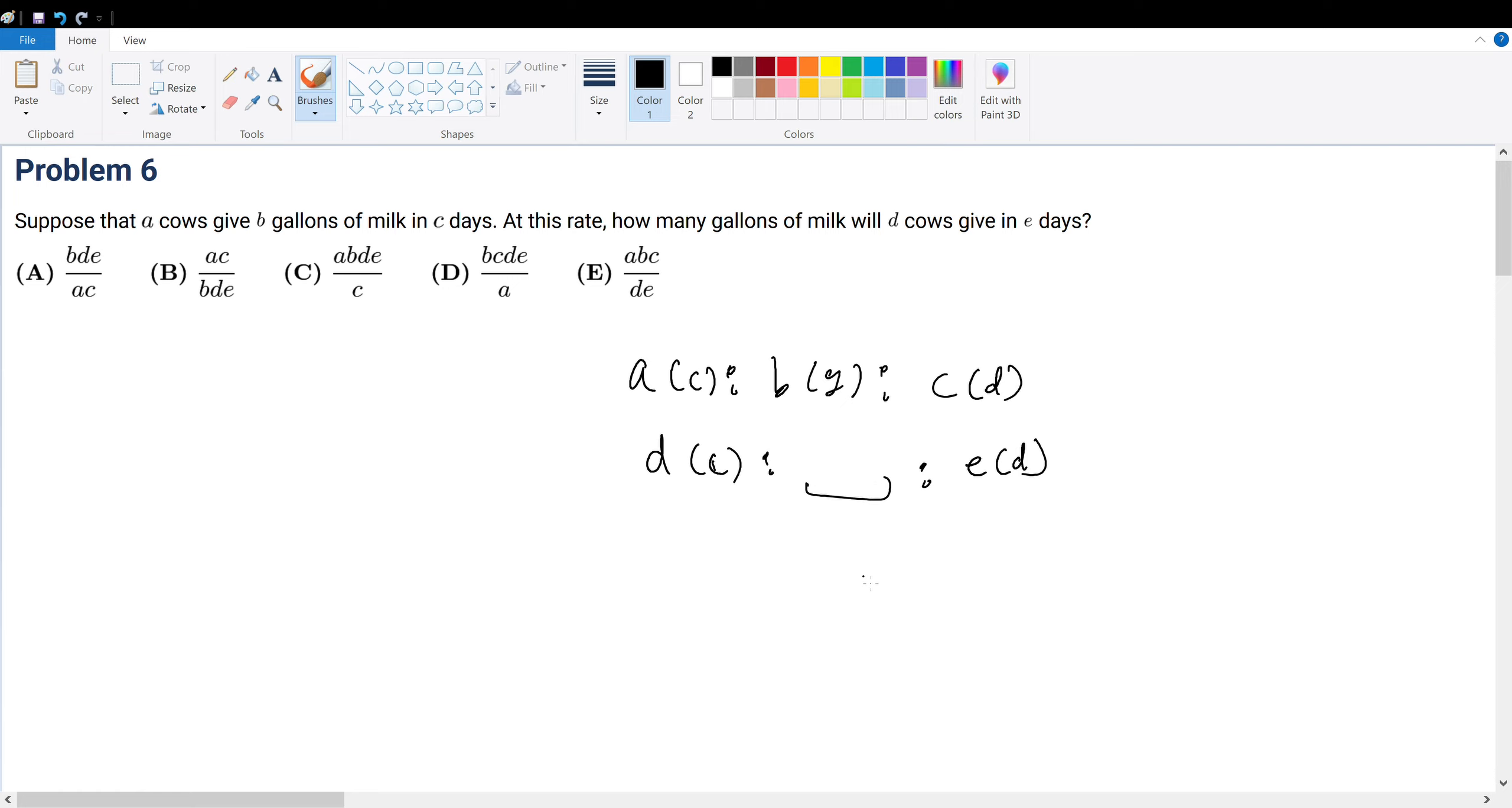Let's just use a big conversion factor because this is literally what the question is. Originally, we know the relationship between cows and gallons—it's A to B—but we're trying to solve for gallons.